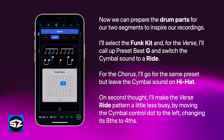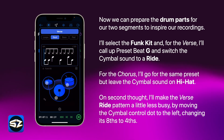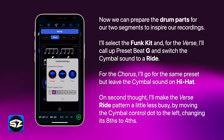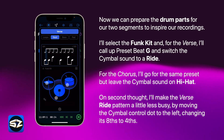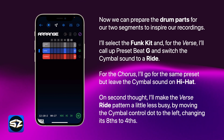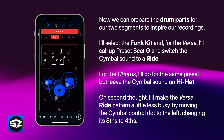I'll select the fun kit, and for the verse I'll call up preset beat G and switch the cymbal sound to a ride. For the chorus I'll go for the same preset, but leave the cymbal sound on hi-hat.